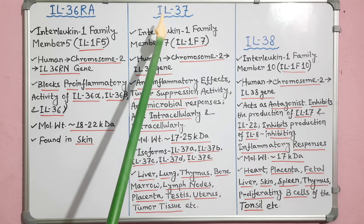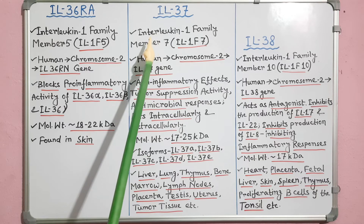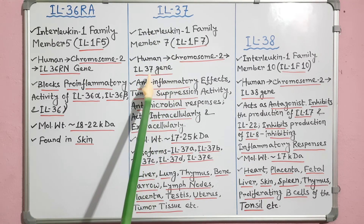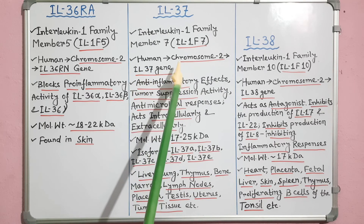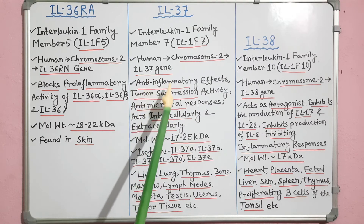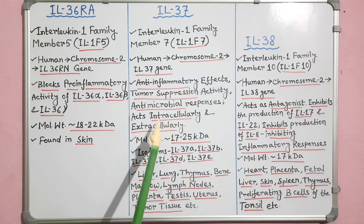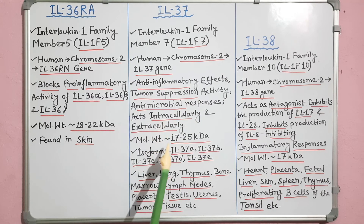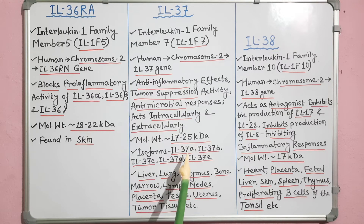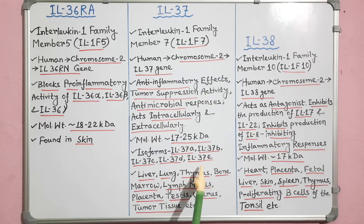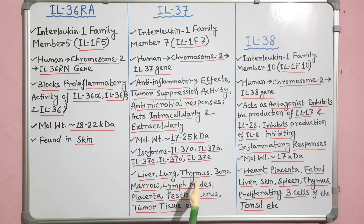Interleukin-37 is also known as interleukin-1 family member 7 or IL-1F7. It is encoded by the IL-37 gene of chromosome 2 in humans. It has anti-inflammatory effects, tumor suppression activity and antimicrobial responses. It acts both intracellularly and extracellularly. Molecular weight is about 17 to 25 kilodalton, and it has 5 isoforms: IL-37A, IL-37B, IL-37C, IL-37D and IL-37E. IL-37 expression has been detected in human tissues such as liver, lungs, thymus, bone marrow, lymph nodes, placenta, testes, uterus and tumor tissue.